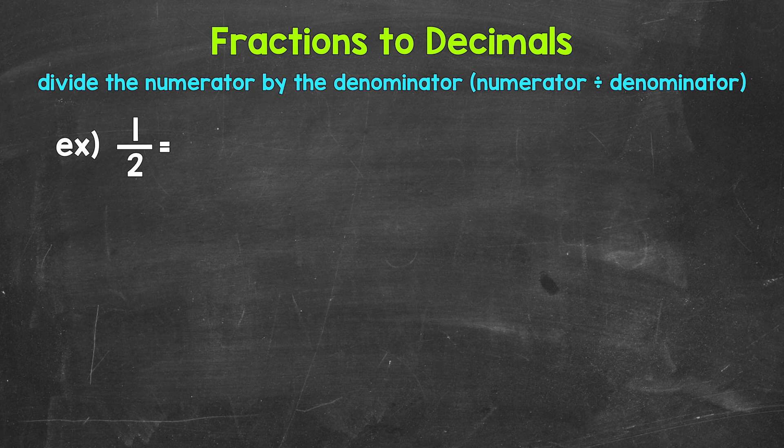Now when we convert a fraction to a decimal, we can divide the numerator, the top number of the fraction, by the denominator, the bottom number of the fraction.